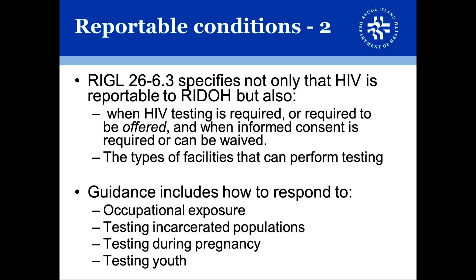The Rhode Island General Law not only specifies that HIV is reportable, but also goes into greater detail to discuss when HIV testing is required, when it should be offered to individuals, and when informed consent is either required for testing or can be waived. The general laws also talk about the types of facilities that can perform testing. Some specific guidance includes what to do in the case of an occupational exposure, how to test incarcerated populations, when to test during pregnancy, and rules around testing youth. We encourage you to take a look at the Rhode Island general laws or the rules and regulations provided at the links previously.